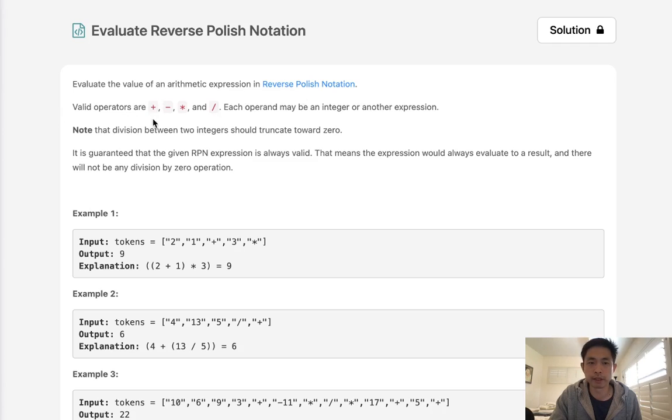Valid operators are plus, minus, multiply, and divide. Each operand may be an integer or another expression. Note that the division between two integers should truncate towards zero, so we'll always be rounding down. And it is guaranteed that the given expression is always valid. That means the expression will always evaluate to a result, and we don't need to worry about any division by zero operations.